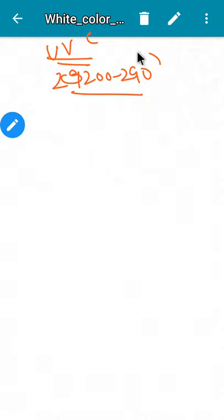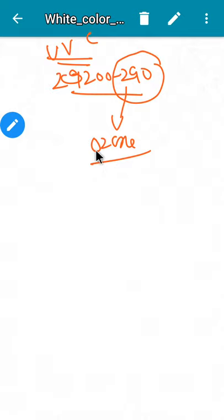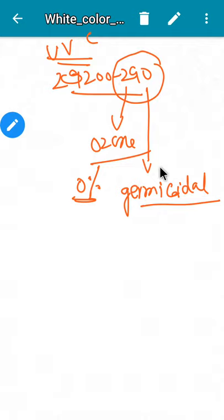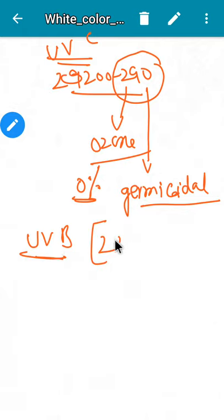Ultraviolet C has a wavelength ranging from 200 to 290 nanometers. This 290 nm wavelength is cut by the ozone layer — the ozone layer will not permit it. Hence the percentage of ultraviolet C in sunlight is zero; they are not present in sunlight. This wavelength is germicidal.